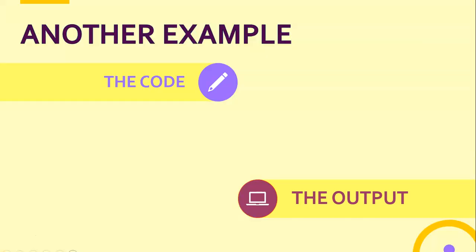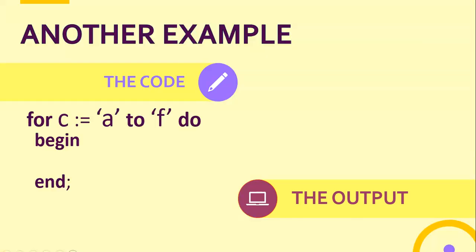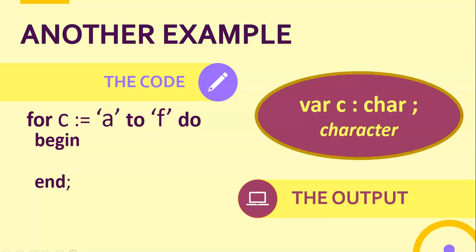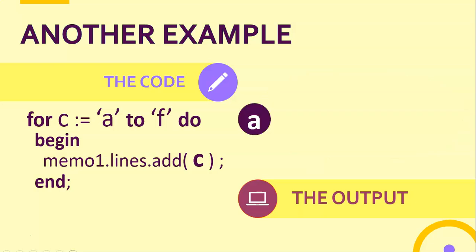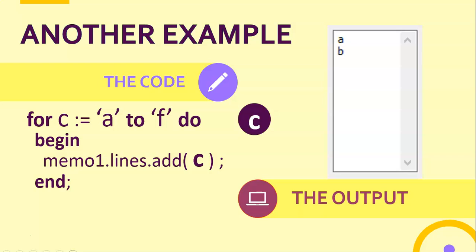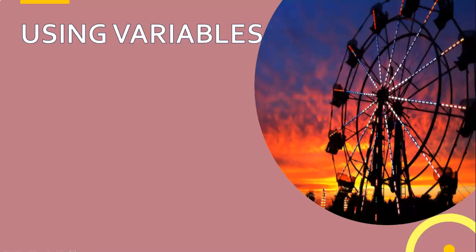Let's look at another example: using a char variable. The 'c' variable is of type char. Remember I said char is ordinal - letters are ordinal because if you have an 'a' you know the next letter is going to be 'b'. So we go from 'a' to 'f' and display the 'c' variable in a memo control. Because char is basically a string of size one, we don't need to convert it. 'c' starts as 'a', displays it, becomes 'b', displays it, then 'c', 'd', 'e', 'f'. We don't use characters a lot but now you know how.